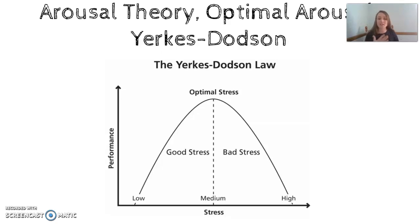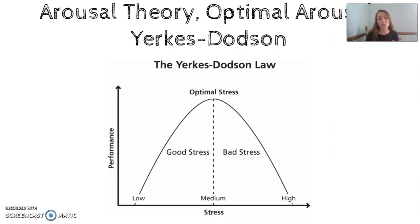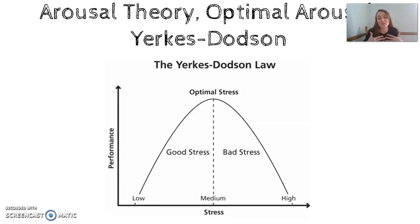The Yerkes-Dodson Law adds a performance piece. In terms of how much arousal or sensation we need to perform a certain task, a little bit of tension and an aroused state is good. But there's a point where too much sensation makes us perform poorly. Think of going up to the free throw line — a little bit of nerves keeps you focused, but too much makes you shake and miss. So the Yerkes-Dodson Law says there's an optimal amount of tension that helps performance, and too much hurts it.